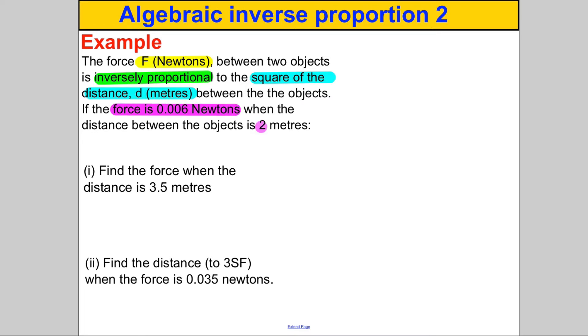Step one, let's find our formula. The force is inversely proportional to the square of the distance D, so it must be directly proportional to 1 over D squared. Therefore F must be K over D squared, where K is our constant of proportionality. We can substitute in here: 0.006 for F and we can substitute in for D, 2. So 2 squared like that.